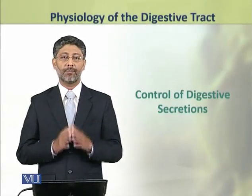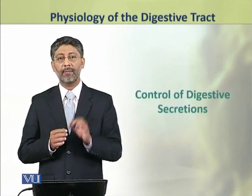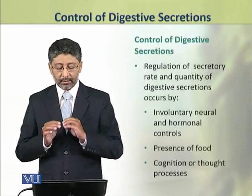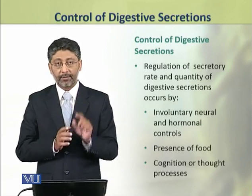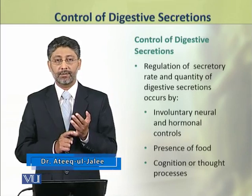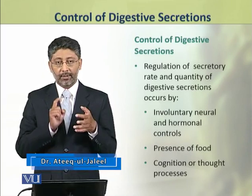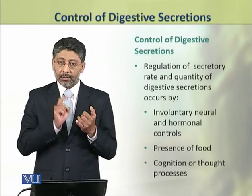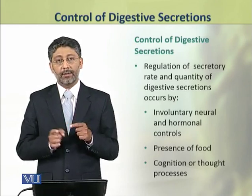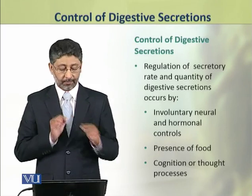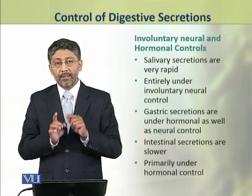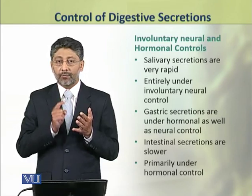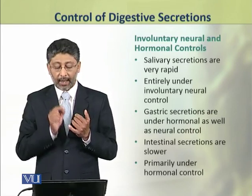Dear students, in this topic we shall discuss the control mechanisms of digestive secretions. The regulation of secretory rate and quantity of the digestive secretions happens by the involuntary neural and hormonal controls. The presence of food and the cognition are thought processes. We shall discuss these three types of controls in detail one by one. First, we are going to discuss the involuntary neural and hormonal controls.